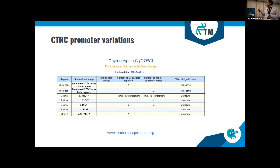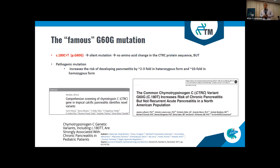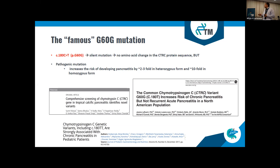I also have to talk about the famous G60G mutation and how it is connected to the promoter variants. The G60G mutation is a mutation in exon 3 of the chymotrypsin C gene. It is a silent mutation, which means there is no amino acid change in the CTRC protein sequence. But what is confirmed by many publications is that this mutation is accumulating in patients with chronic pancreatitis.